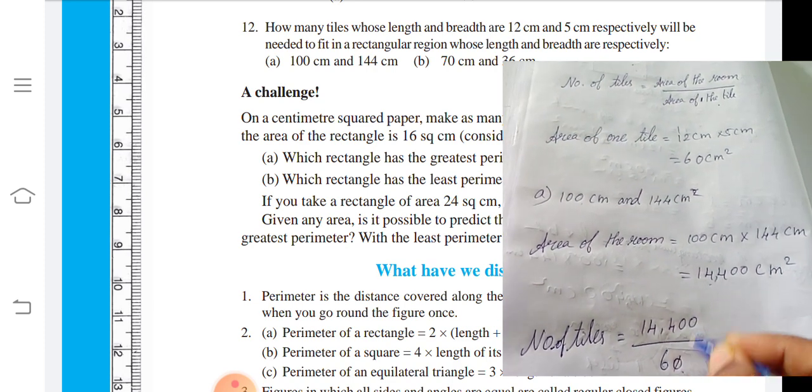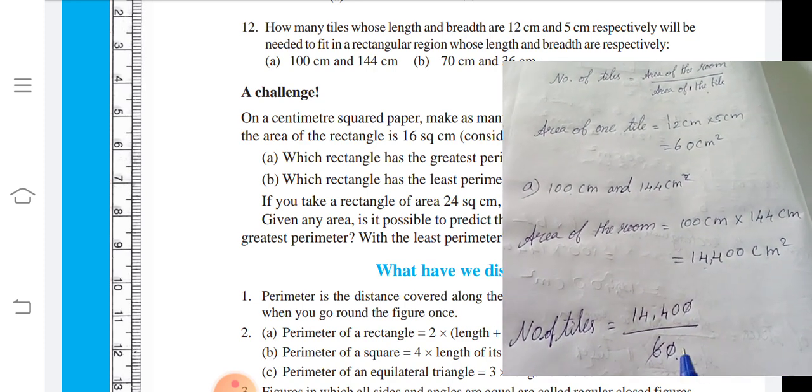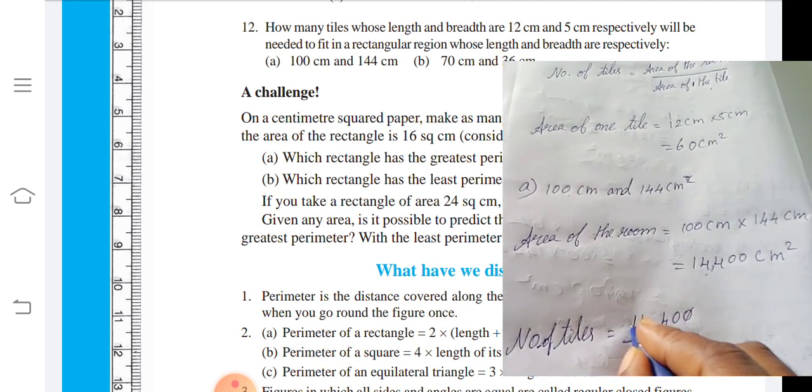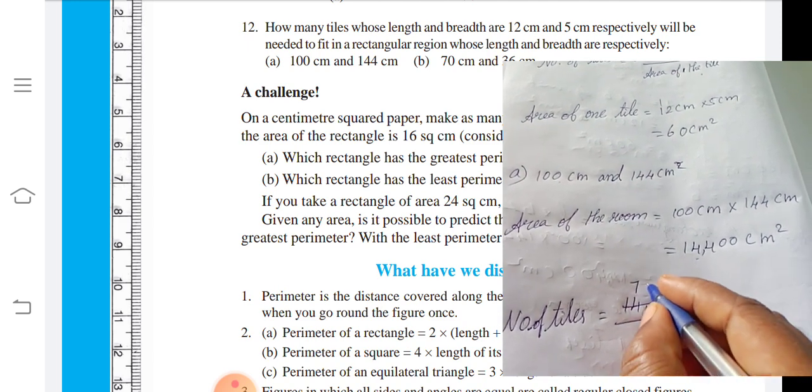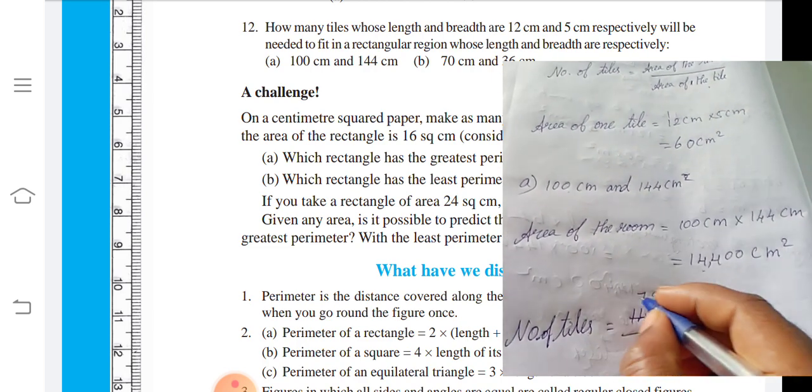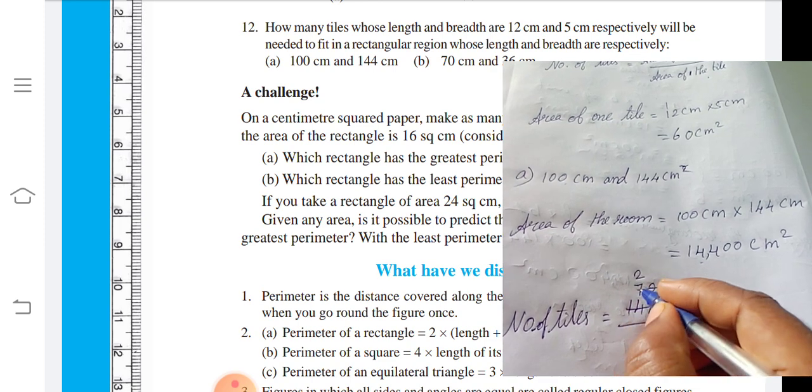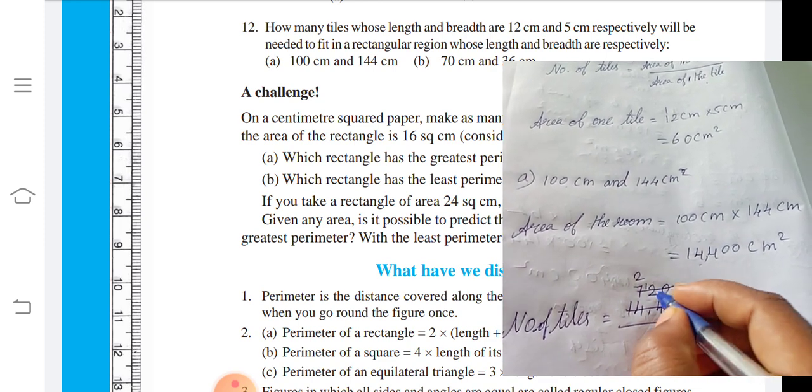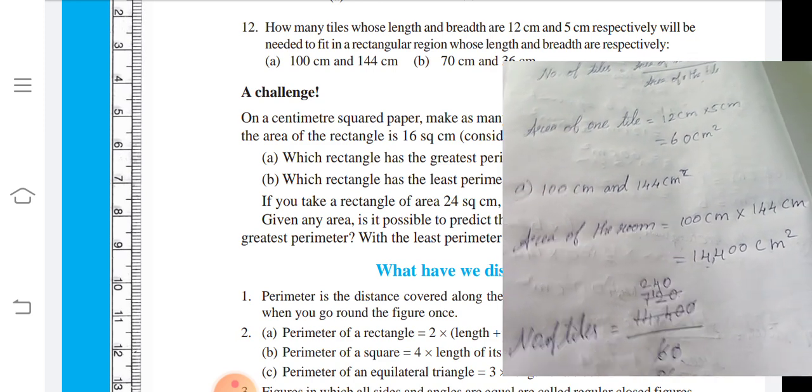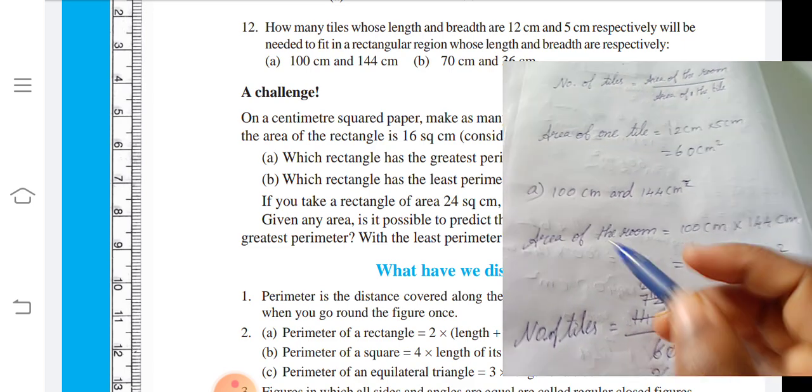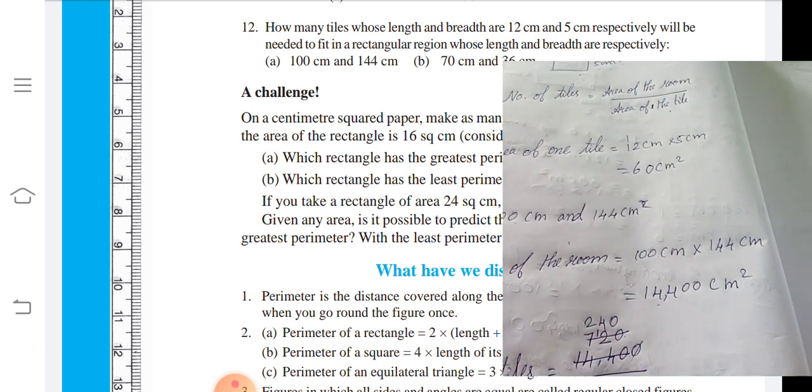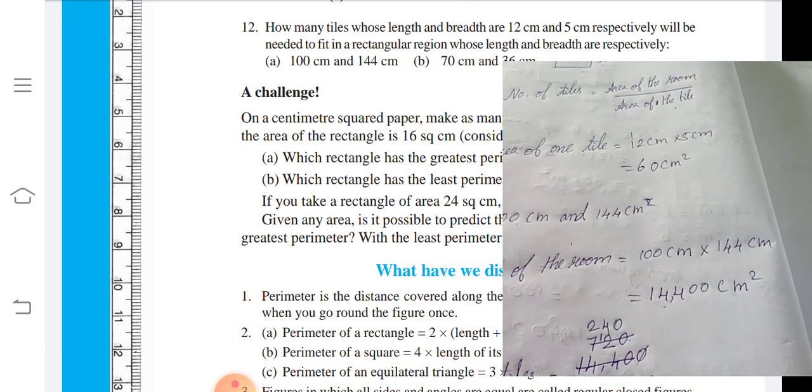Substituting: 14,400 divided by 60. Cancel the zeros. Next, use the 2 table to cancel. 2 times 3 is 6, 7 times 2 is 14, 2 times 2 is 4. Next using 3: 1 times 3 is 3, 2 times 3 is 6, remainder 1. 3 times 4 is 12. So for the first room, 240 tiles are needed to fit the rectangular region.